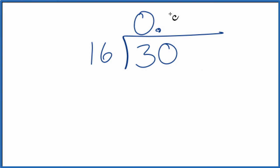16 will go into 30 just one time. 1 times 16 is 16, so we subtract. We get 14. Won't go into 14. We're going to move over one decimal place and call this 140.